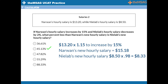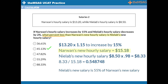To find out what percent more or less an amount is than another, focus on the amount after the word 'than' — this amount will be your divisor or denominator. Here the question asks what percent less than Narwhan's salary is Neelab's, so Narwhan's salary is our divisor. Therefore, we do 8.33 divided by 15.18, not the other way round. This gives 0.5487. But be careful — the question asks what percent less the salary is, not what percent of Narwhan's salary it is. Neelab's new salary is about 55% of Narwhan's new salary, which means it is 45% less than Narwhan's salary. This is the same as saying: if one amount is 90% of another, then it is also 10% less than that amount.